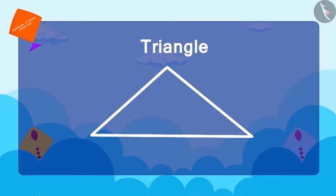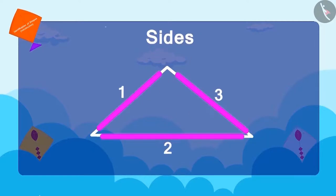How many sides are there? Three. And how many corners? Three. A triangle has three sides and three corners.